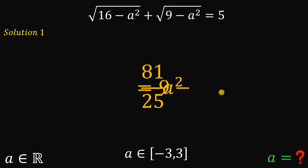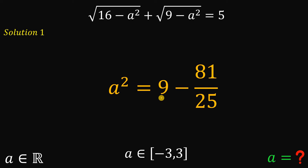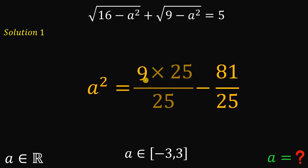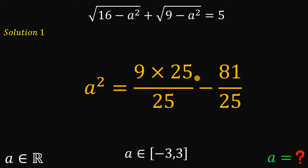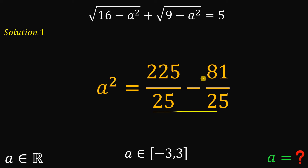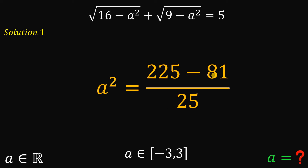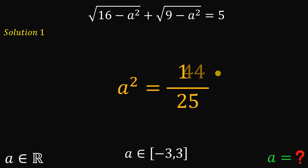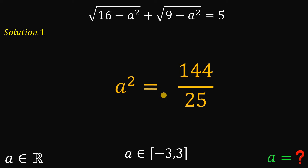Let's rearrange some terms. To combine the two fractions, we multiply 9 by 25 over 25 to get the same denominator. 9 times 25 gives us 225. Combining gives us 25 minus 81 over 25, and 25 minus 81 is 144. Wait — rearranging: A squared equals 225 over 25 minus 81 over 25, which equals 144 over 25. Now let's get the square root on both sides.